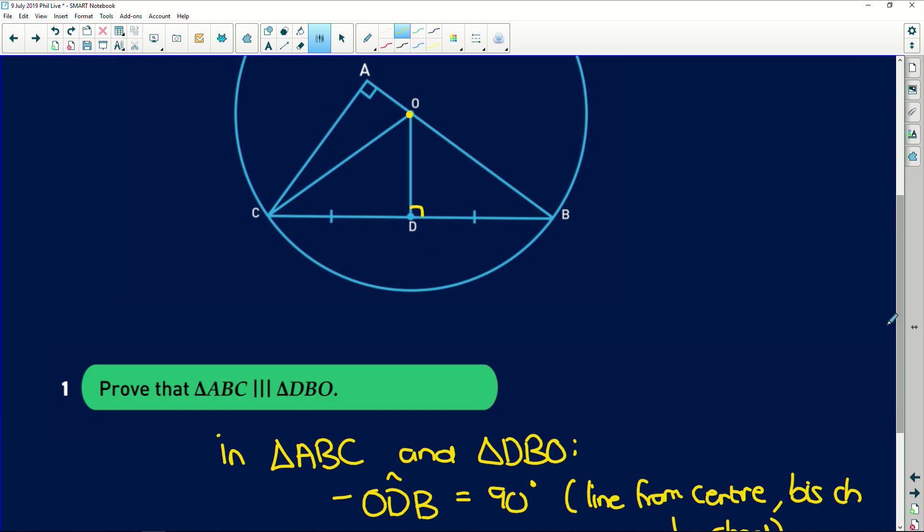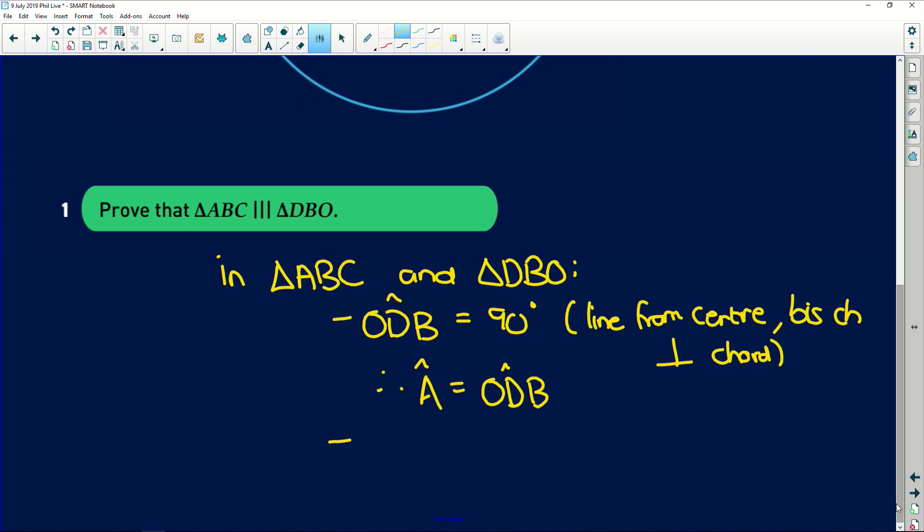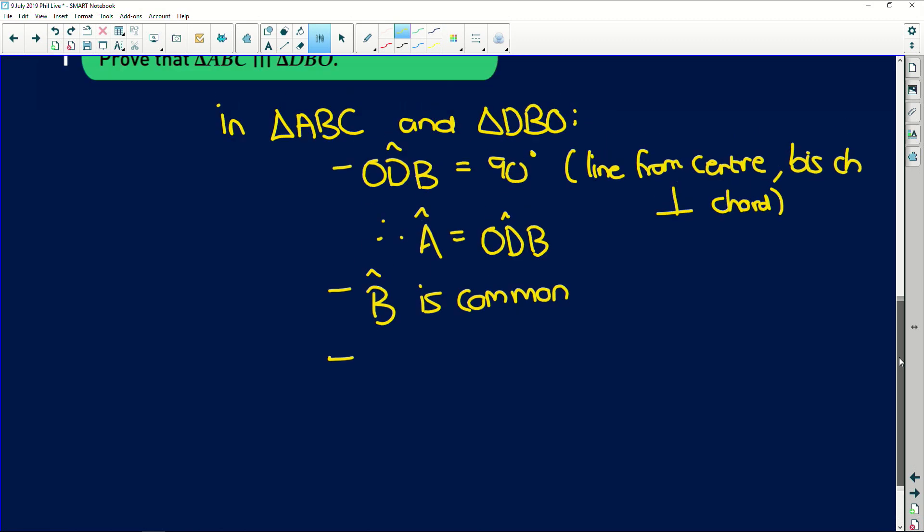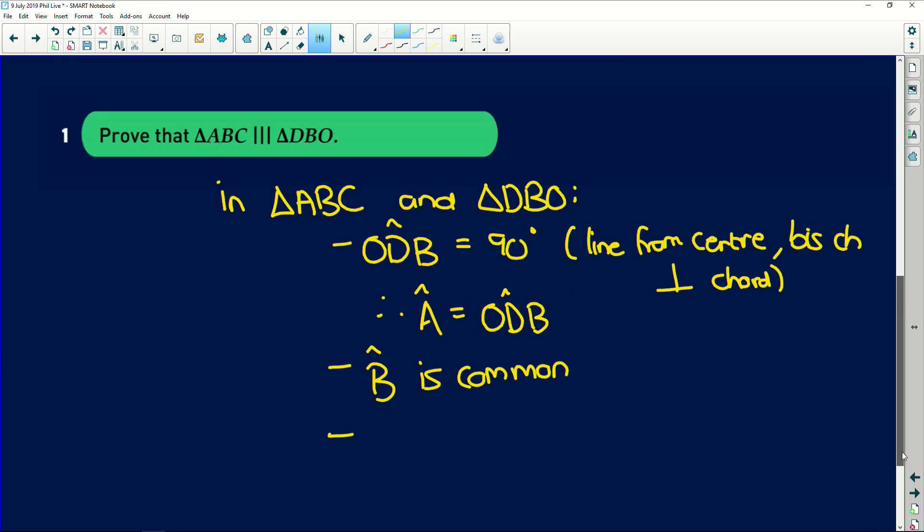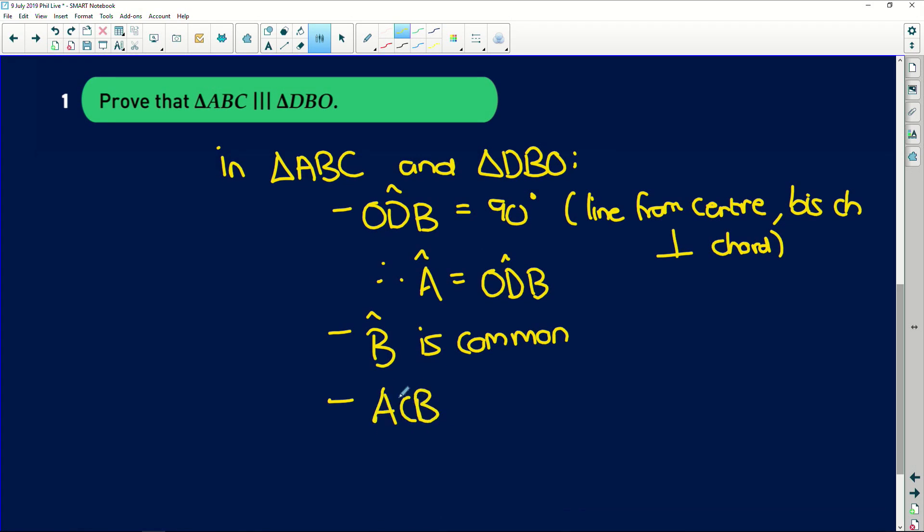Secondly, we're proving that this big triangle here is similar to the little triangle. We can automatically see that angle B is common to both triangles. And lastly, the remaining angle, angle ACB is equal to angle DOB. Why? Remaining angle in the triangle.